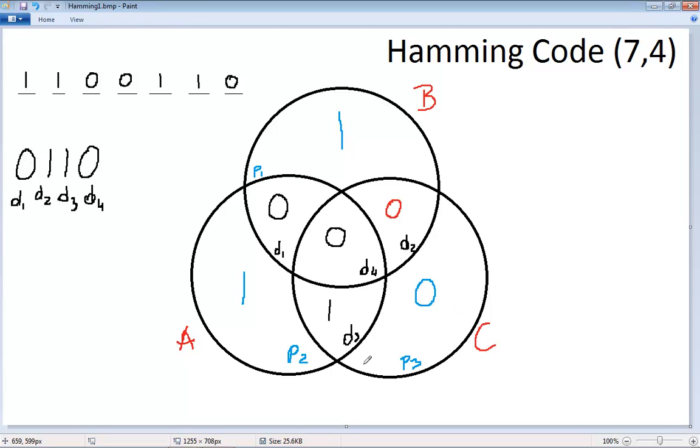Therefore, we have enough information to correct this error. This is not a 0, it should be a 1. And when this is a 1, all the parities now agree. In circle B, we have 1 and 1, therefore this is even parity. In C, we have two 1s, and it's again even parity, so we add a 0.